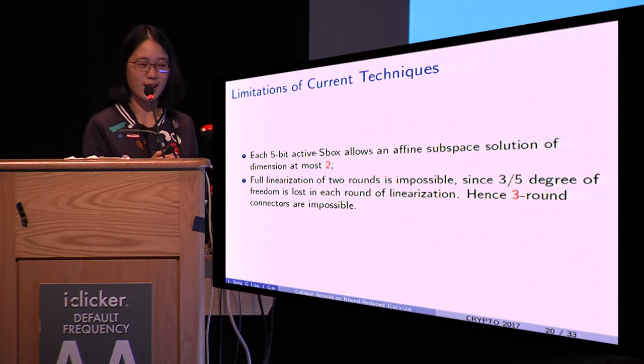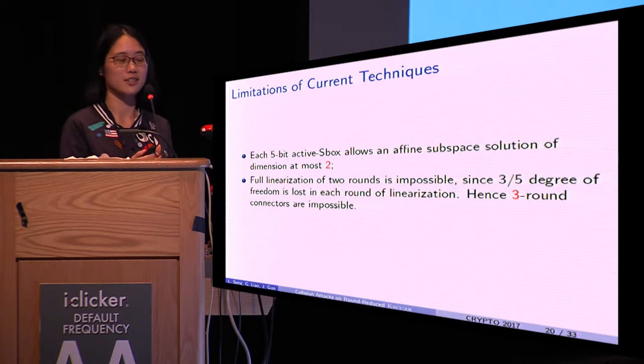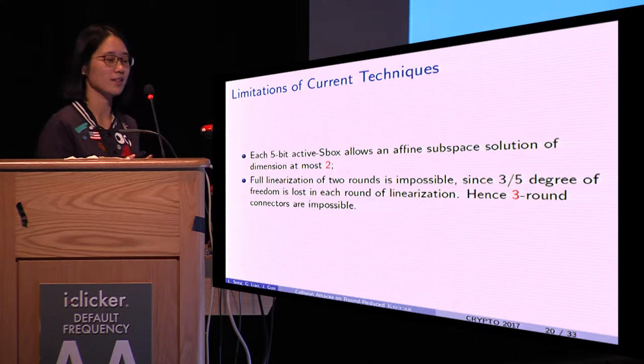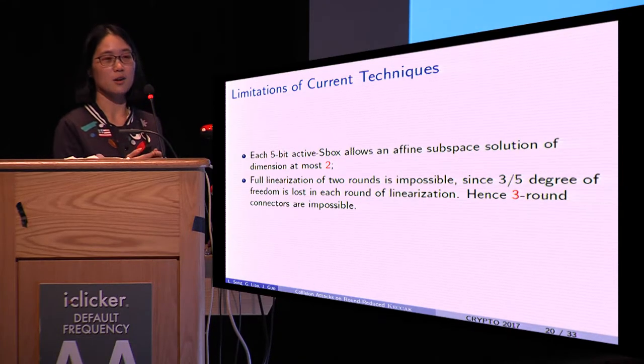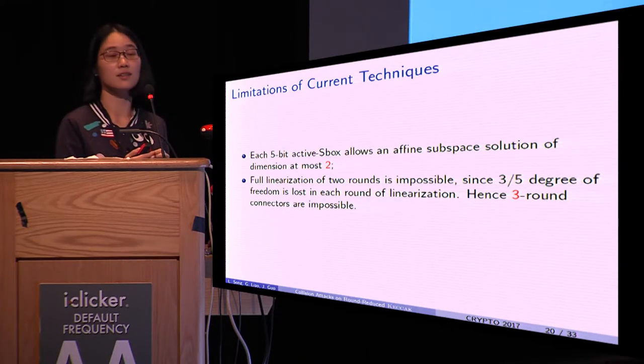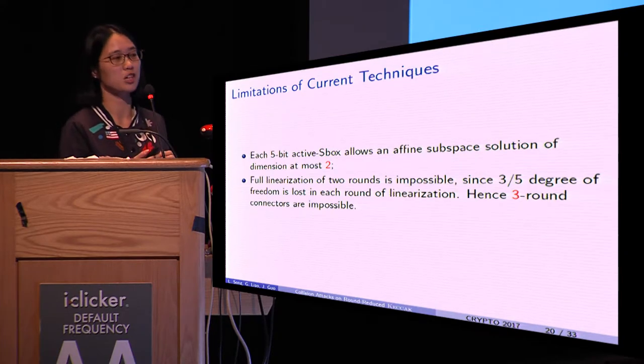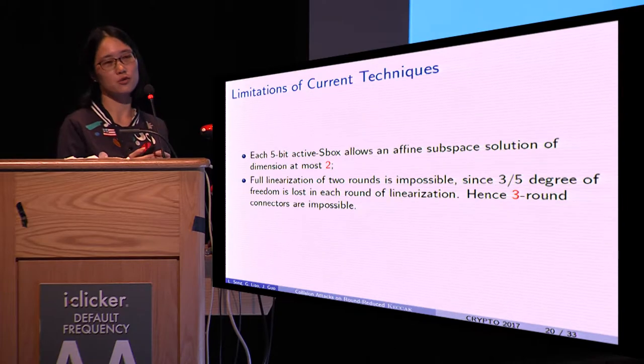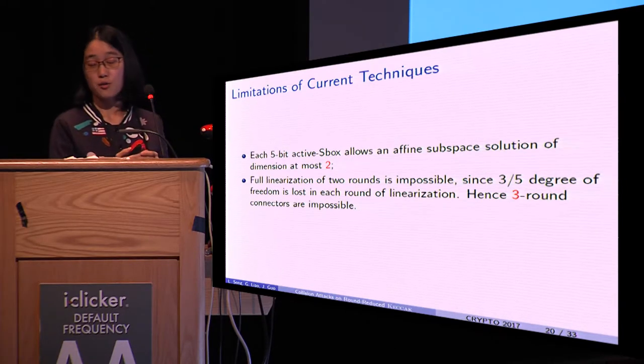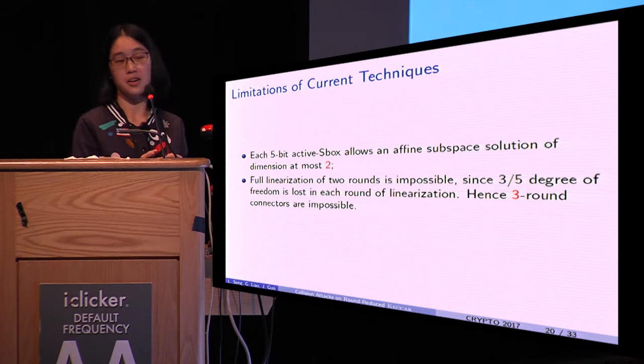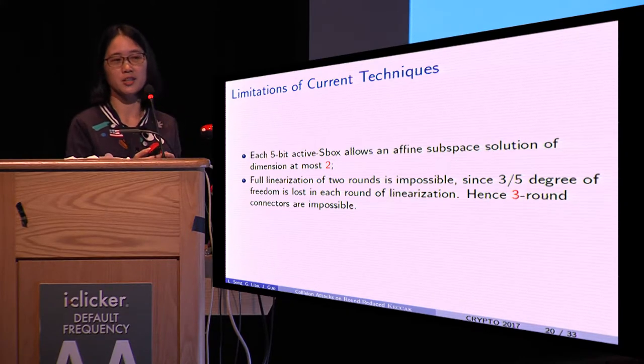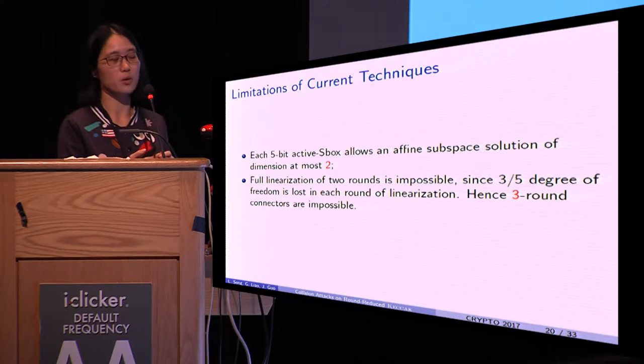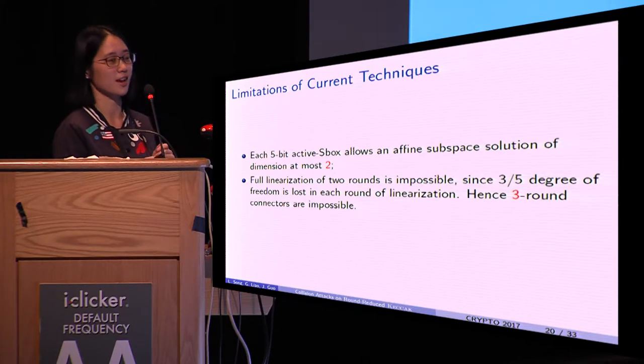However, there are limitations of current techniques. First of all, each 5-bit active S-box allows an affine subspace solution of dimension at most 2. Consequently, full linearization of two rounds is impossible since 3/5 degrees of freedom are lost in one round of linearization. So it is also impossible to construct three-round connectors.